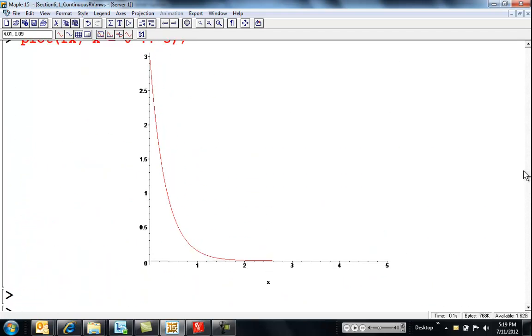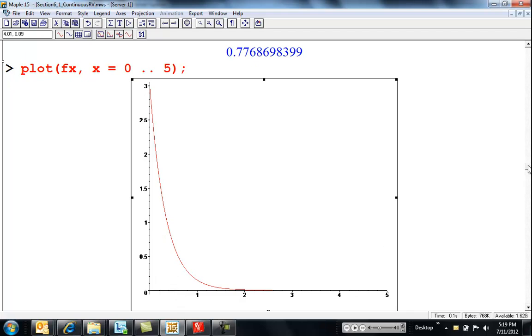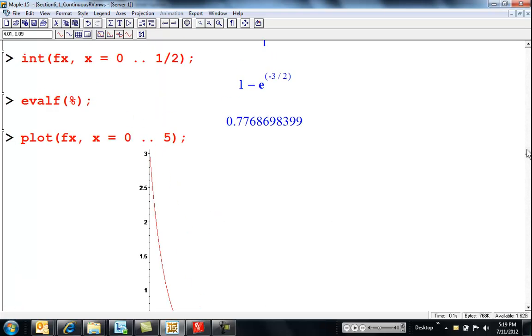Okay, so here's our graph. And what we were finding was the probability it lasted at most a half hour or so. It was really the area under the curve right here up to a half, if you imagine taking all that area, that's about 78% of the area of the whole curve, which is one.